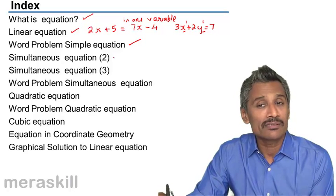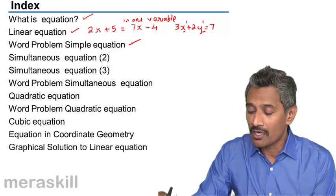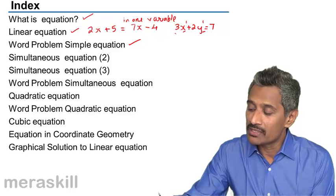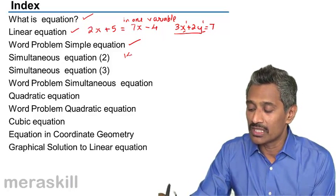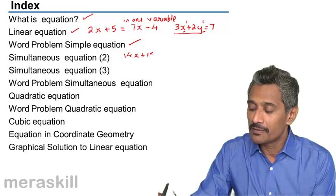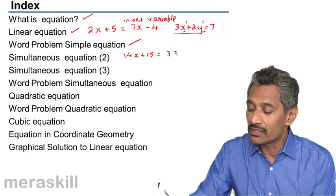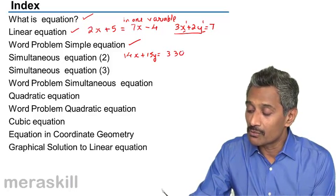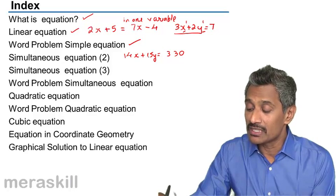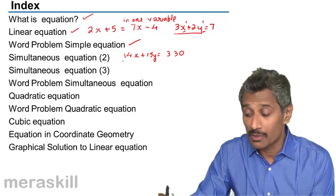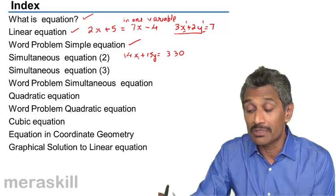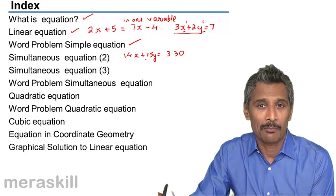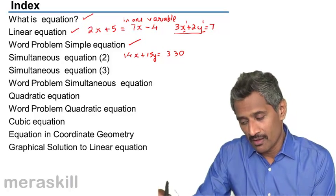Then we have simultaneous equations. Simultaneous equations are going to be the ones like this. Simultaneous equations like 14x plus 15y is say 330. Simultaneous equations, we call them simultaneously because we solve two equations simultaneously to get a unique pair of solutions.